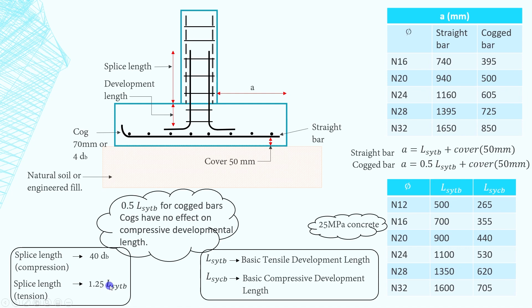Additionally, since the pad is calculated as a beam fixed to the column we also have tensile development length for the bottom reinforcement which I show here on this table as a. This distance a has to be minimum of these values. For instance, if the bottom reinforcement is N20, the distance a has to be 940 millimeters for straight bars or 500 millimeters for cogged bars.